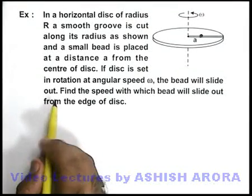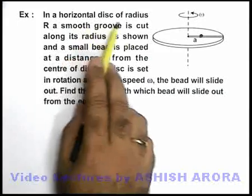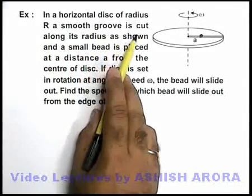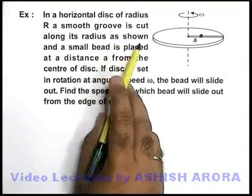In this example, we are given that in a horizontal disc of radius capital R, a smooth groove is cut along its radius as shown.